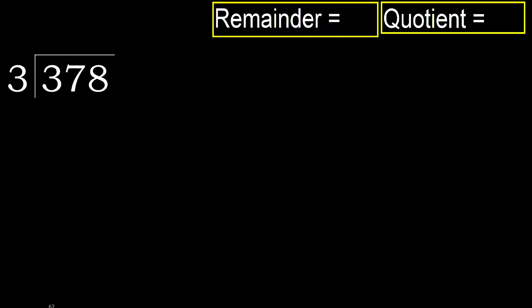378 divided by 3. 3 is not less, therefore work with 3. 3 multiplied by which number is nearest to 3, but not greater. 3 multiplied by 2 is 6 — 6 is greater. Multiplied by 1 is 3. It is not greater.